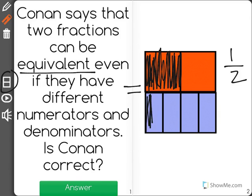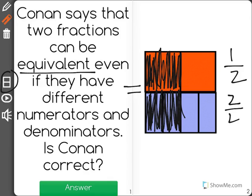If I shade in the bottom the same amount of area so that they take up an equivalent amount of space, I would shade in two out of the four pieces. These fractions are equivalent because they take up the same amount of space.